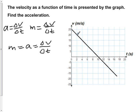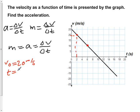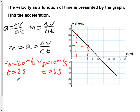We now pick two arbitrary points along this line, this being our initial position and this one being our final point. We now write down the values at each of those. So our initial velocity is 20 meters per second at a time of t equals two seconds. Our final velocity is equal to 10 meters per second at a time of t equals six seconds.